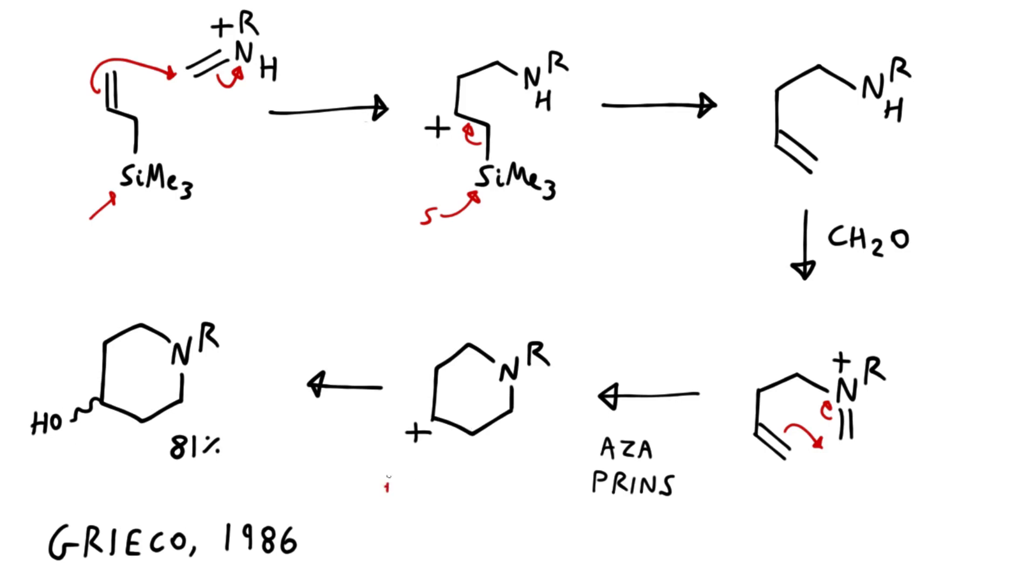This is quenched out by a reaction with the hydroxylic solvent to afford this 4-hydroxy-piperidine in 81% yield, all in one pot from these very small and simple starting materials.